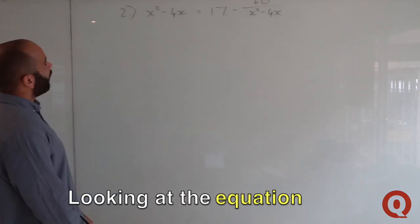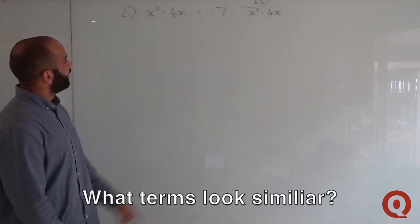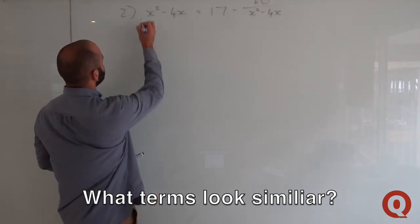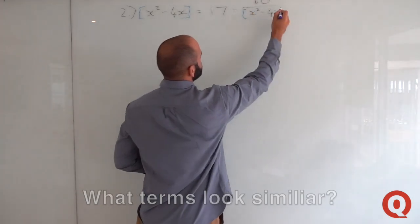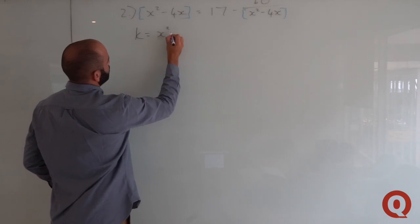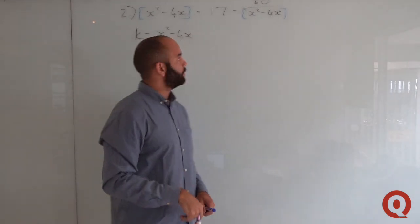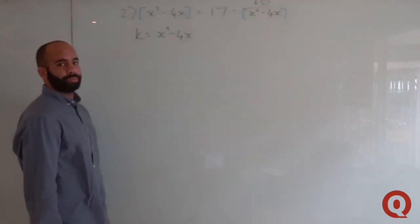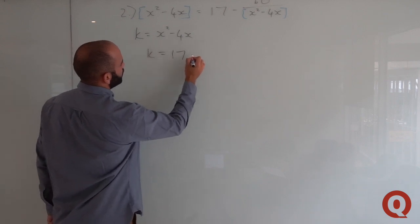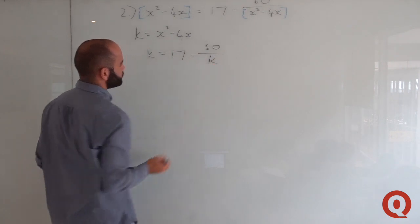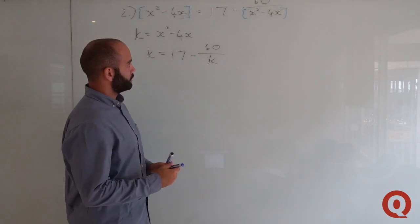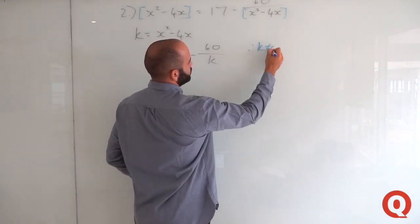Looking at the new expression, terms like 4x, 17, and 60 don't look similar to each other — but by process of elimination, x²−4x appears as a common group of terms. So we let K = x²−4x. Having a denominator and numerator makes things trickier, but the same concept applies. After substitution, we get k = 17 − 60/k.